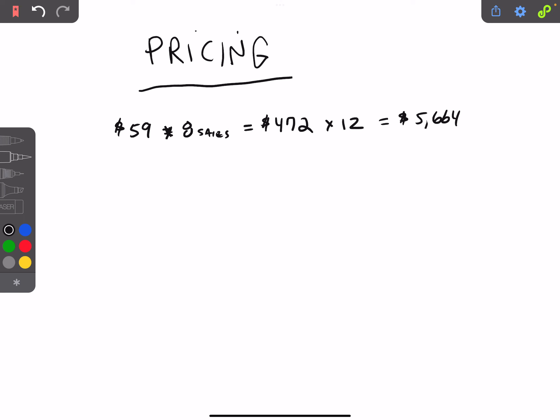So you get up on stage, you speak, price is $59, you got eight sales, you made $472 times 12, you made six grand for a 30-minute speech. Pretty good. I would say go do more of those.